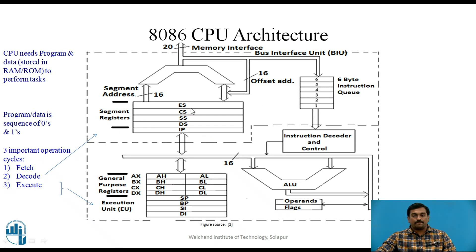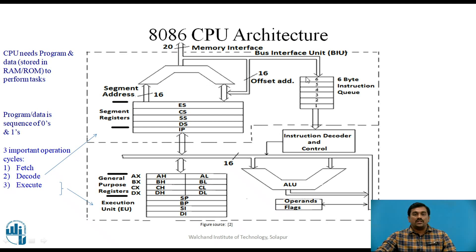The Bus Interface Unit is responsible for fetching instructions. It has a 20-bit address line, and for fetching program and data it needs to generate a 20-bit physical address. This physical address generation mechanism is inside the Bus Interface Unit. The BIU also has a 6-byte instruction queue to store the prefetched instructions. This instruction queue is connected to the instruction decoder and control unit circuitry of the Execution Unit, which is responsible for all internal operations of the CPU.